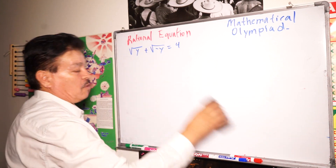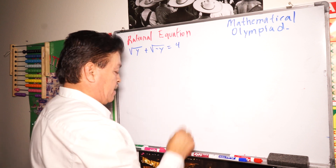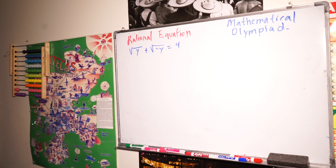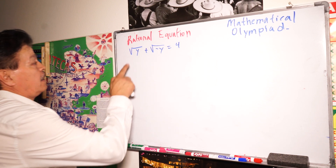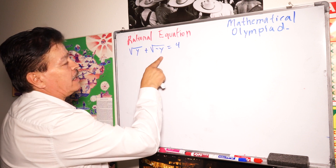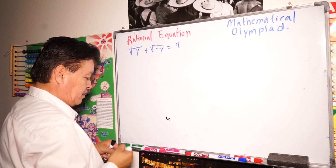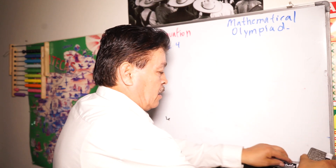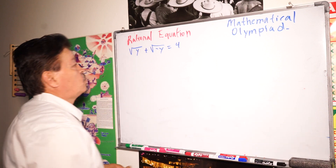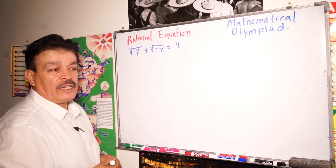The final equation is our problem for today for Mathematics Olympiad. We have this problem here: square root of y plus square root of negative y equals 4. What is the next step in this case to try to find the answer to this radical equation?